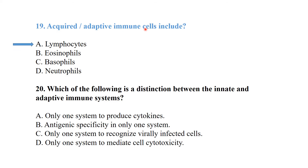Acquired or adaptive immune cells are called lymphocytes — T lymphocytes and B lymphocytes. The distinction between innate and adaptive immune systems is antigenic specificity, which exists only in adaptive immunity.